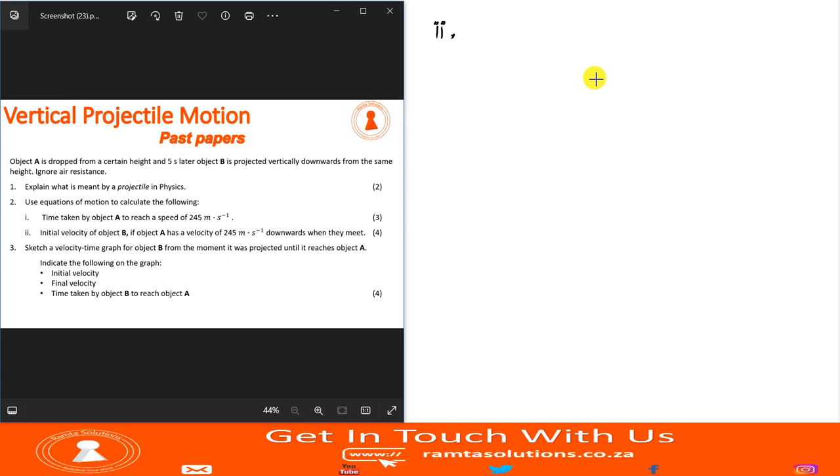So they are meeting at this point when the velocity of object A is 245 meters. This basically tells us that delta Y of object A must be equal to delta Y of object B. This is when they are meeting.